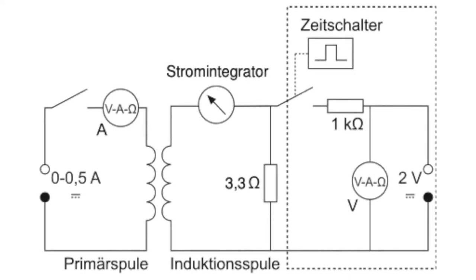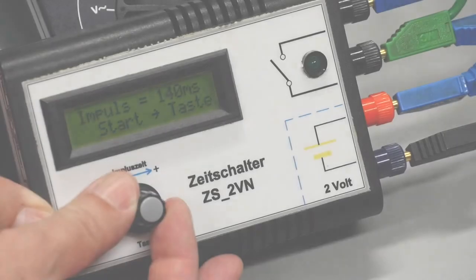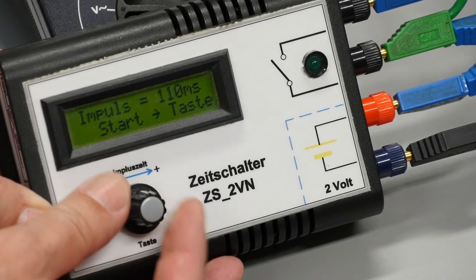The circuit is set up according to the given circuit diagram. The charge meter uses a capacitor to integrate the current. Calibration is performed with a current pulse defined by an electronic timer.